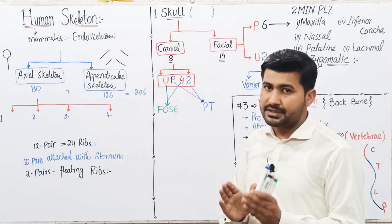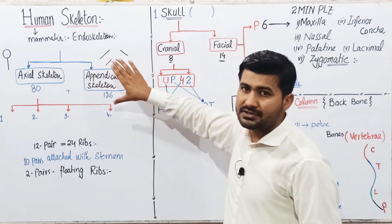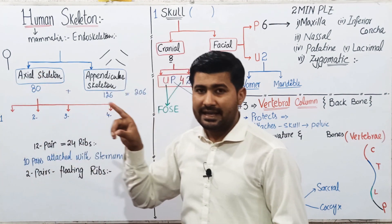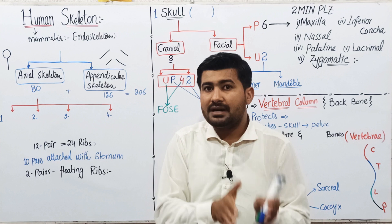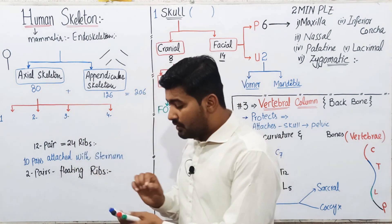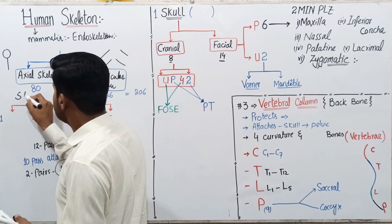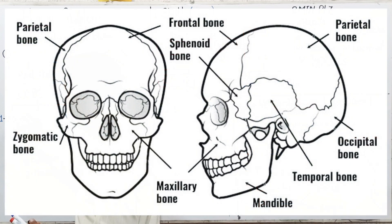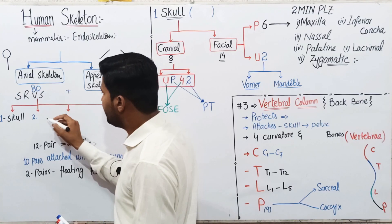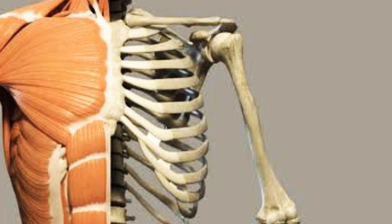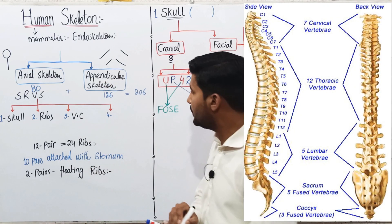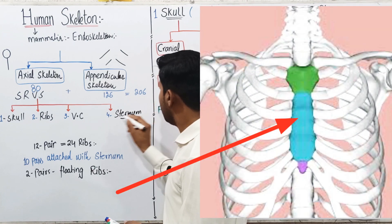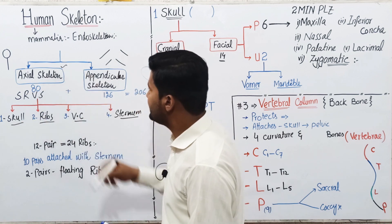Today I'm going to teach mainly the axial skeleton; the appendicular skeleton will be our next lecture. To memorize the parts of the axial skeleton, use the key word SRVS — 'service': S for skull, R for ribs, V for vertebral column (backbone), and S for sternum. These are the four main parts that make up the axial skeleton.